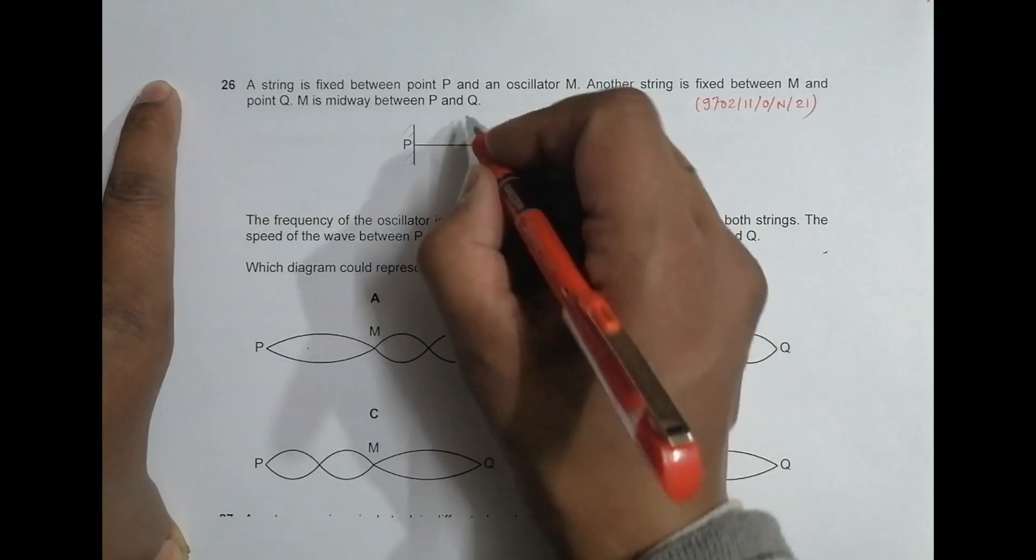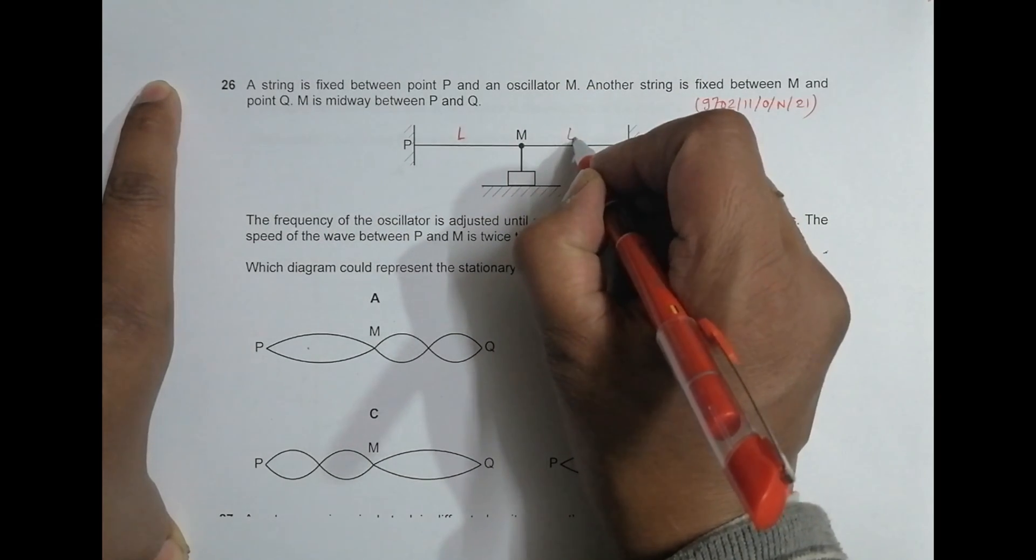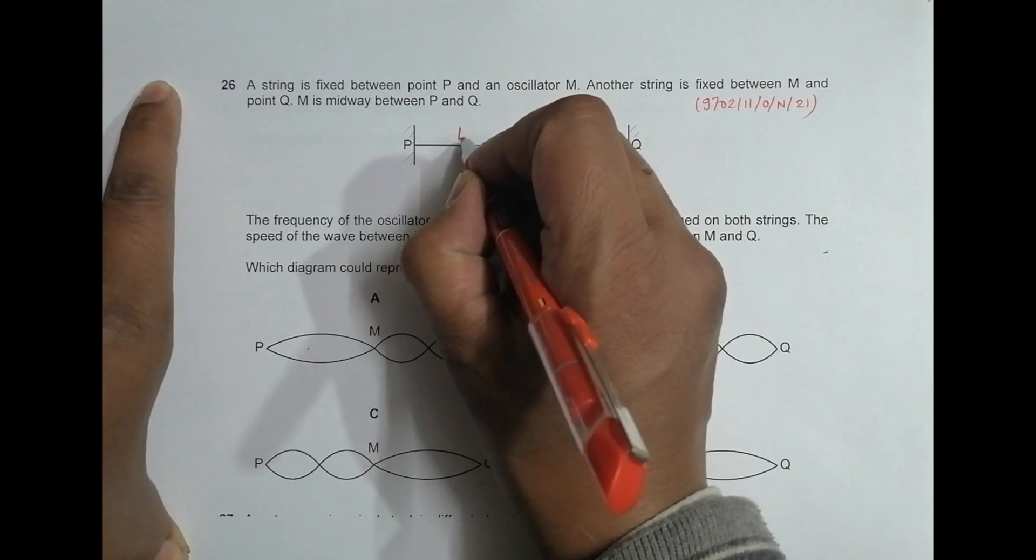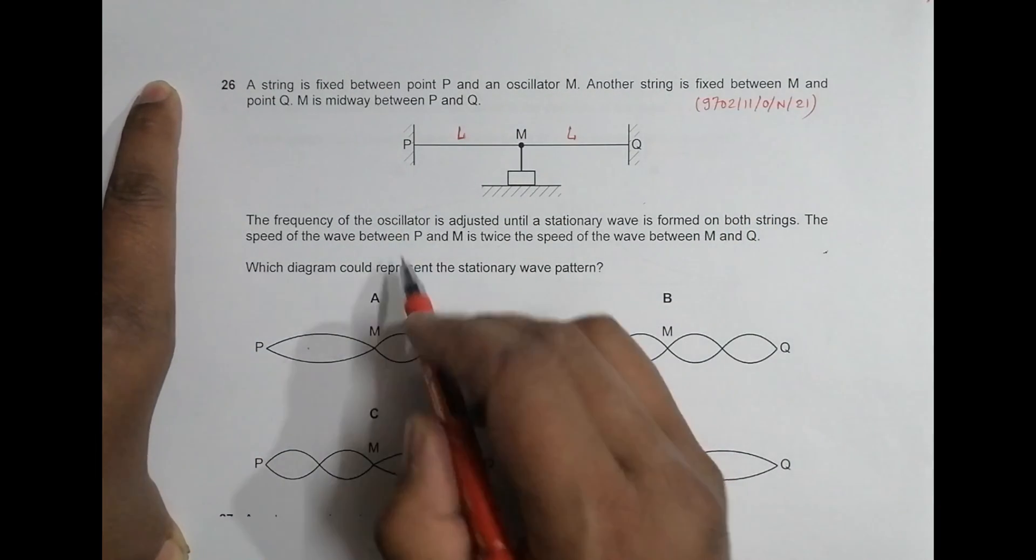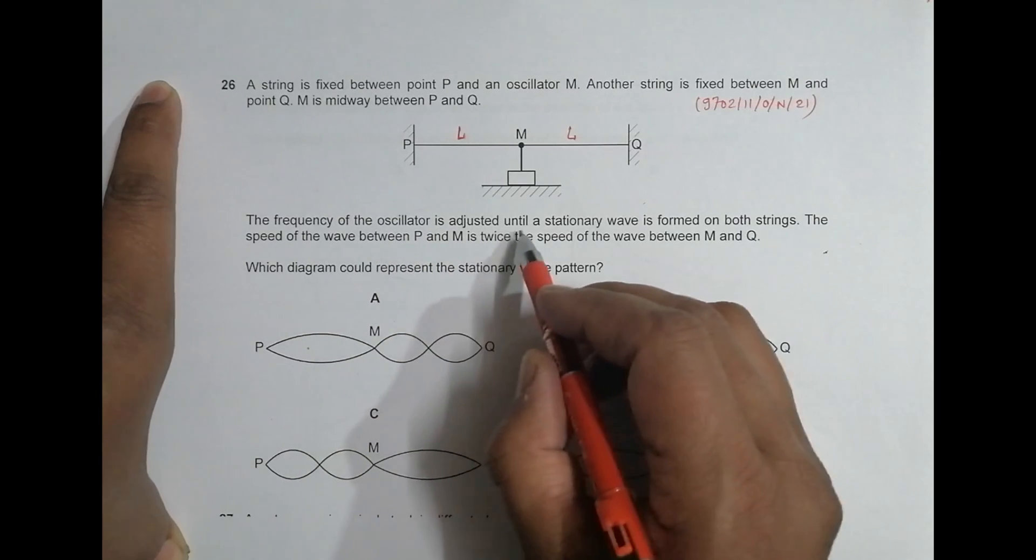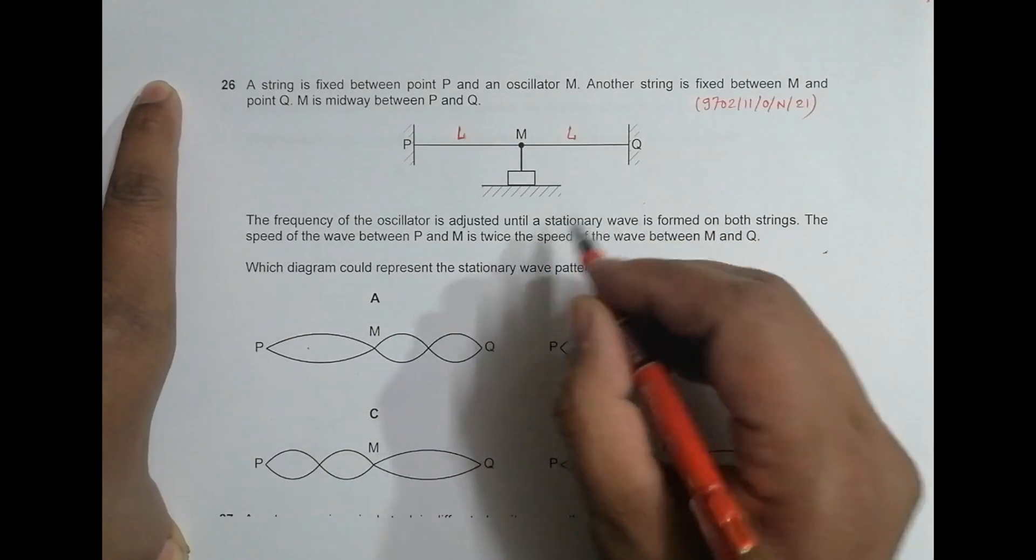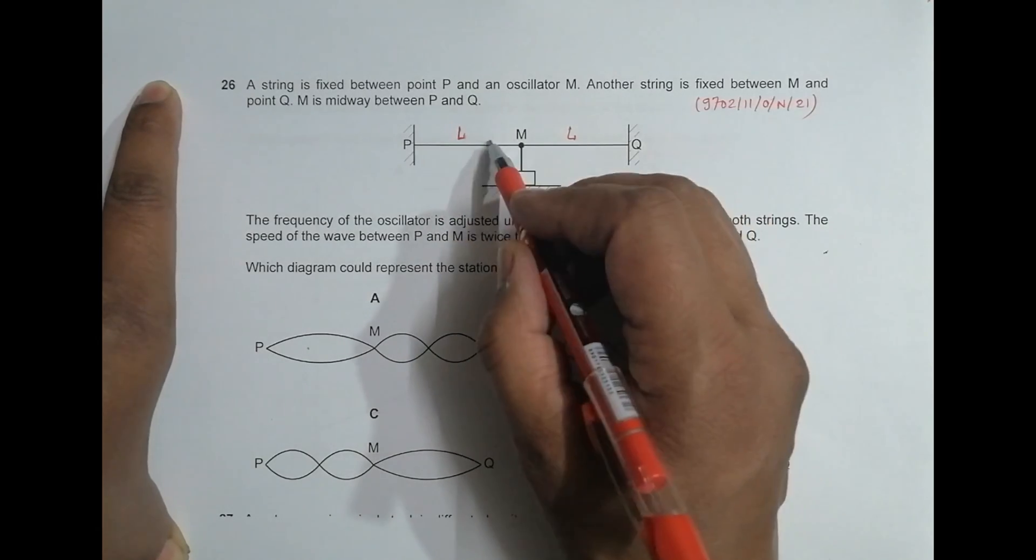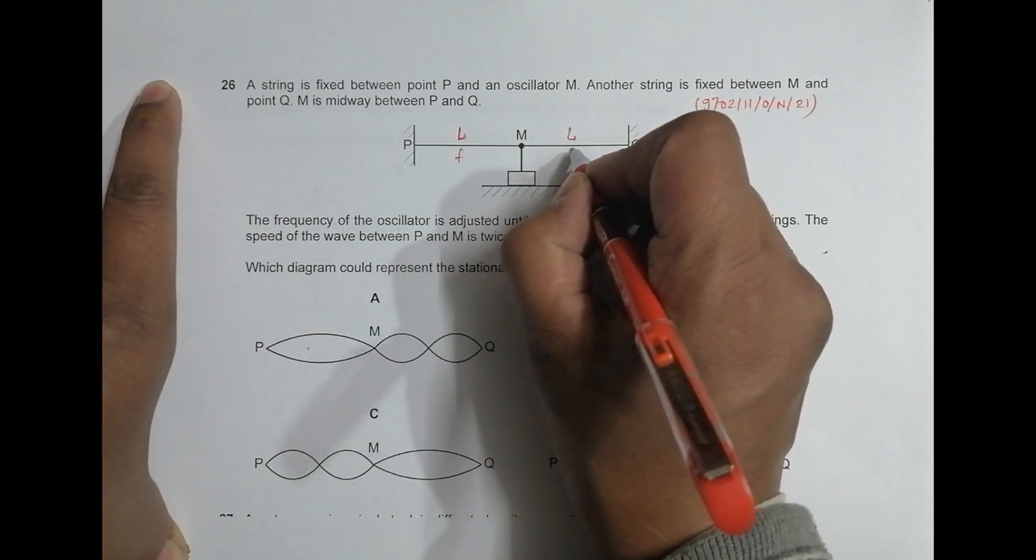So that means the length of these two portions are the same—they are L and L. The frequency of the oscillator is adjusted until a stationary wave is formed on both strings. Since both of them are offered by the same thing, the frequency here and here should be same.